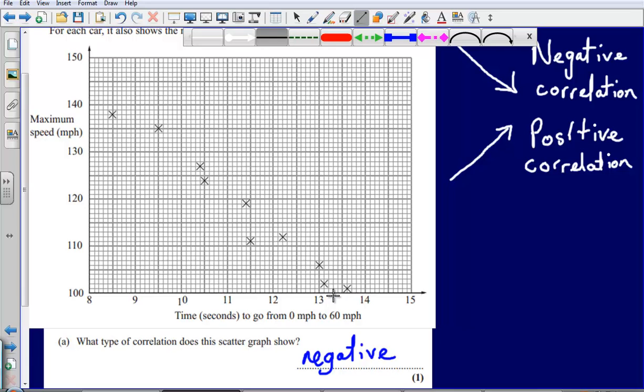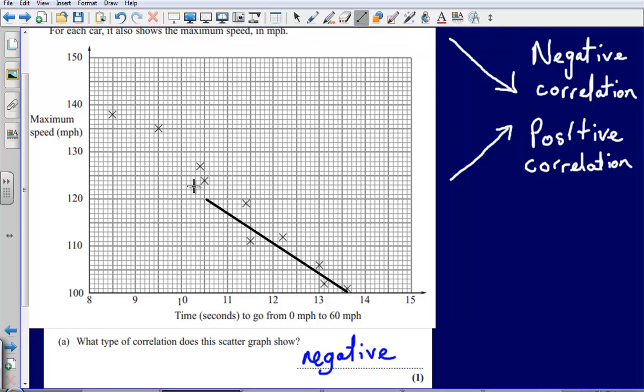The way in which we draw our line of best fit is we simply try to draw it as close to as many of the points as possible. It doesn't necessarily have to touch any of them, it doesn't have to start at any specific point, it just needs to be quite close to a lot of the points there. I might actually just change that a little bit with a ruler so that my line is not too far away from any of the points.